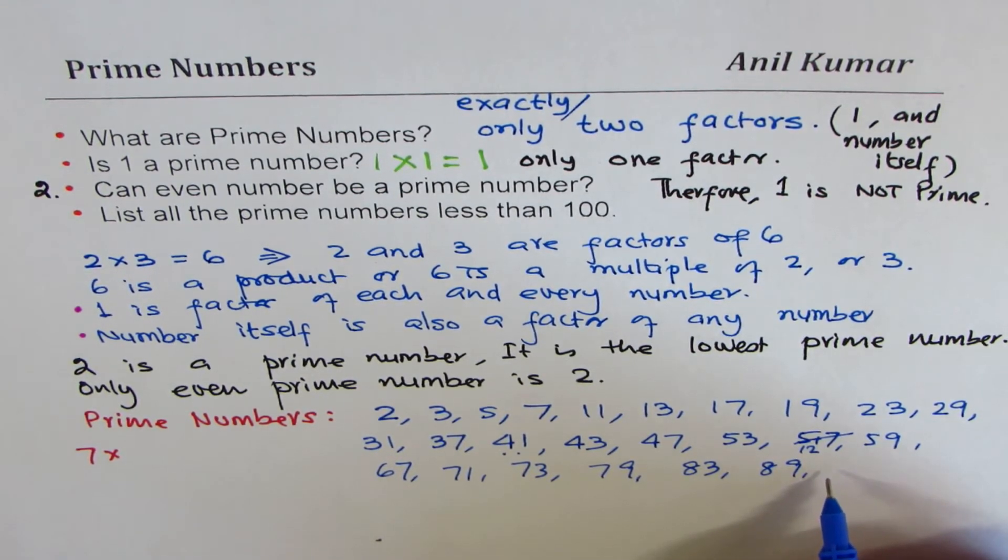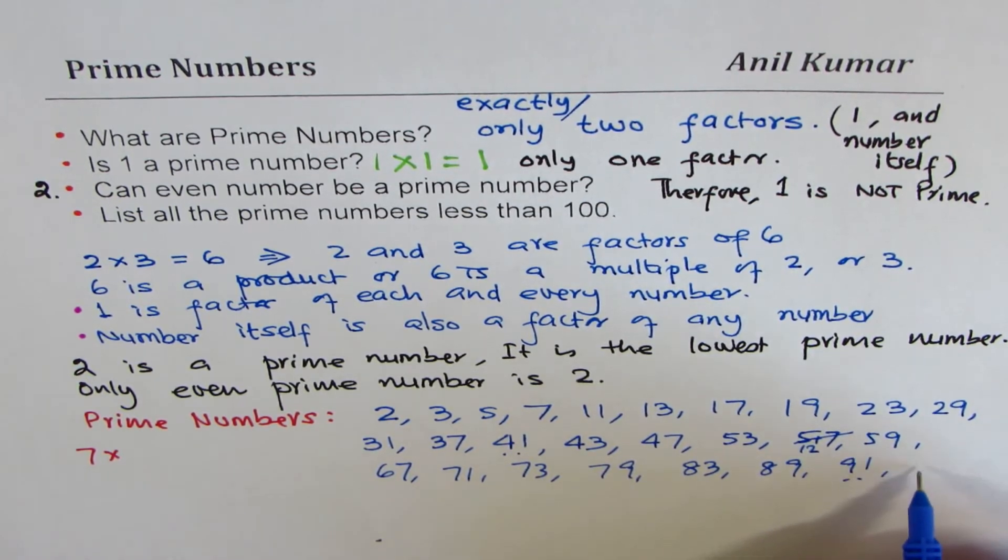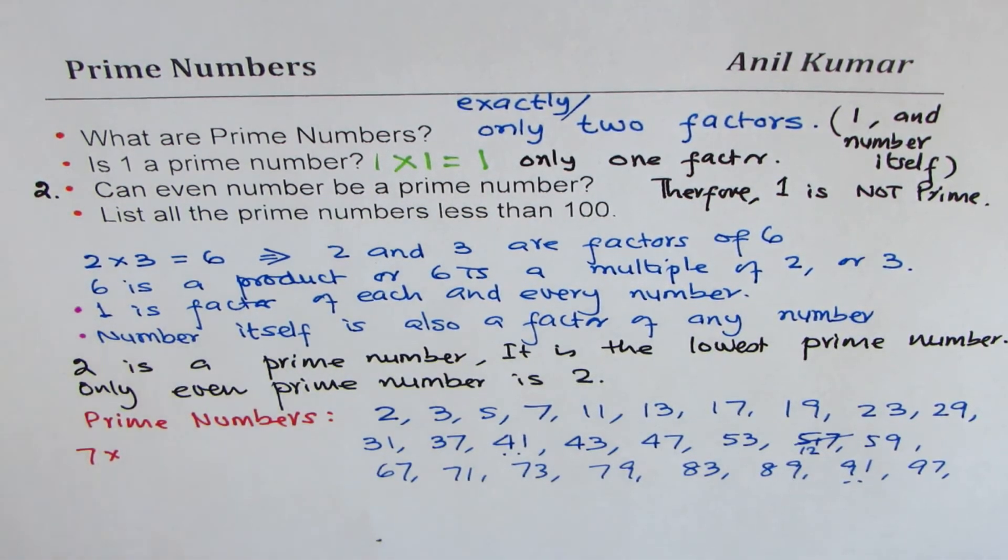89 we can check. Then we get to 90. 91, 9 plus 1 is 10, but we'll keep it for now. 97 we'll try. So let that be our list for now.